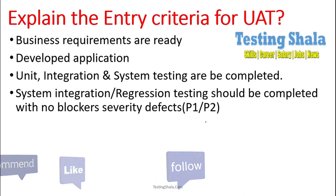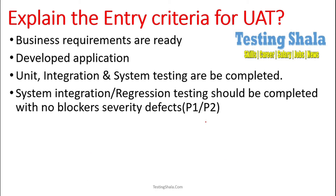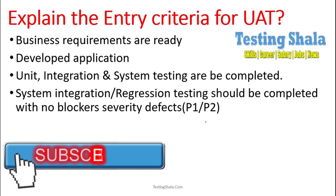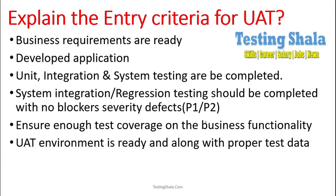There should be no priority 1 and priority 2 defects when we complete system testing or regression testing. There are no blockers from the testing perspective. When there are no blockers, the testing team will sign off from their point of view and hand it over to the user acceptance testing team.